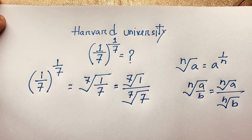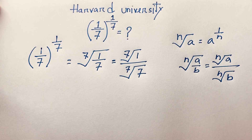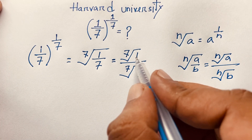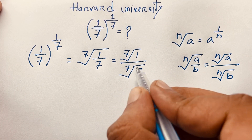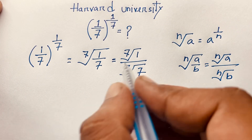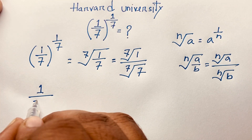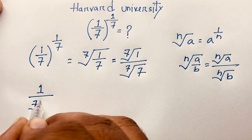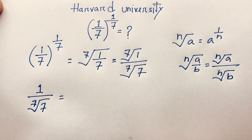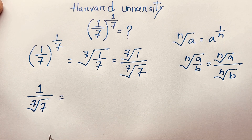Now, at this moment, you can say: 7th root of 1 equals 1. And 7th root of 7 — I can say this expression — gives us 1 over 7th root of 7.